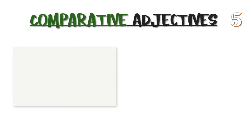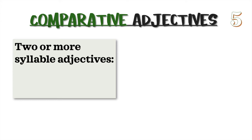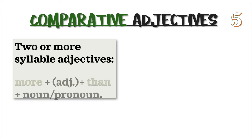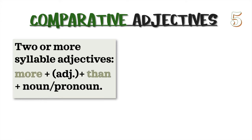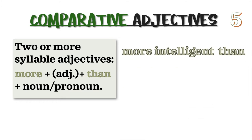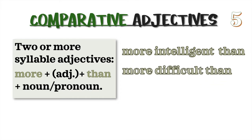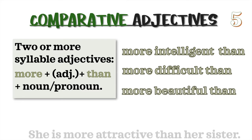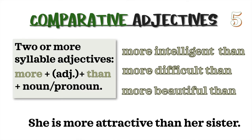Rule 5: Two or more syllable adjectives. We add more, plus the adjective, plus than, plus noun or pronoun. For example: more intelligent than; more difficult than; more beautiful than. Example sentence: She is more attractive than her sister.